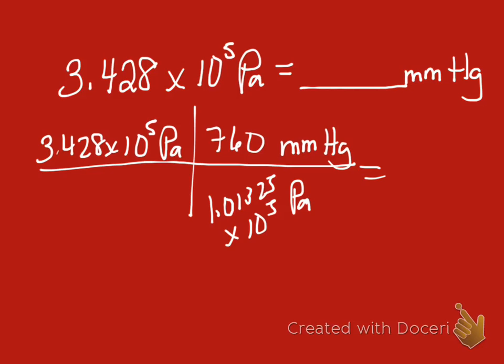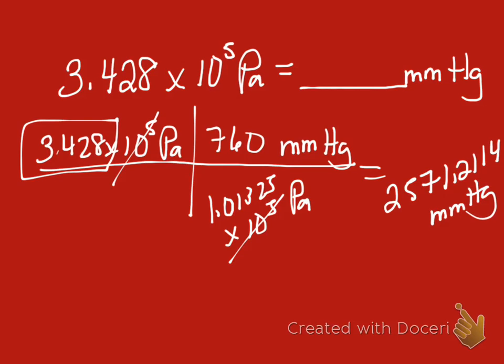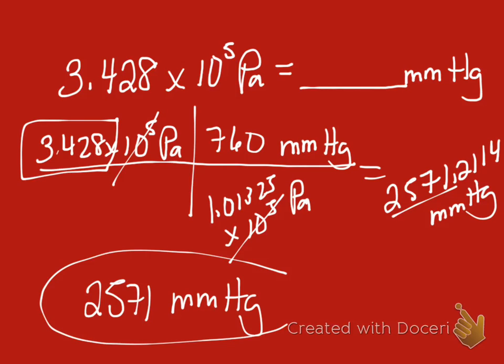So, it's a simple matter of multiplication and division. Note that your 10 to the 5ths are going to cancel as well, so you'll eliminate those from the problem. We get a raw answer of 2,571.211448 mmHg. We have 4 sig figs to work with based on this, so this is going to end up as 2,571 mmHg as a final answer.